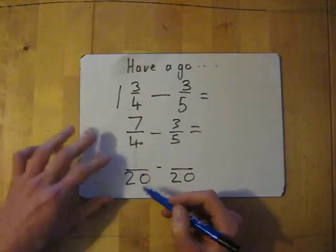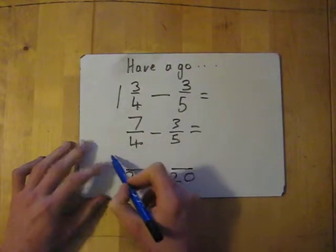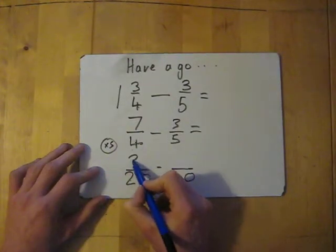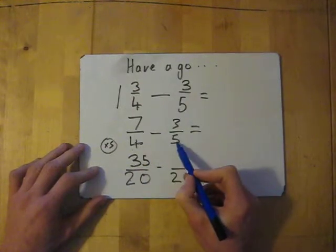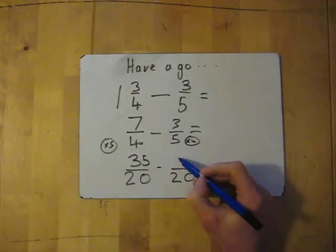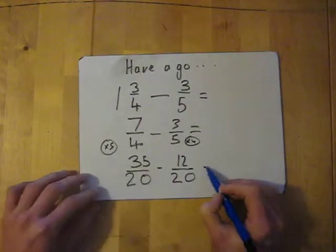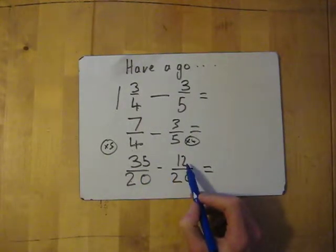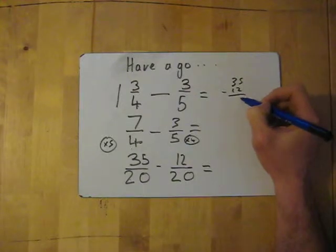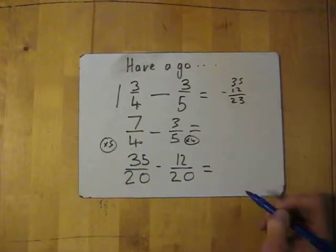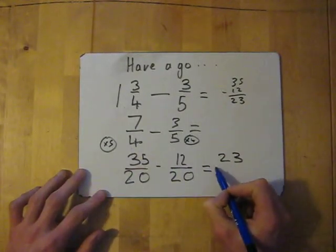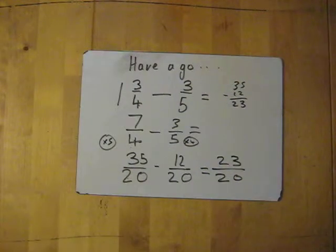Four to get to 20 times by five, so I need to times the top by five as well, which will give me seven times five is 35. To get from five to 20, times by four, so I must times the top by four, which will give me 12. Then I do 35 take away 12, and I'm just going to do a quick column subtraction to make sure. Always do this in the test because it takes two seconds and it's definitely right. 35 take away 12 gives me 23 over 20. Bottom number stays the same. There you go.